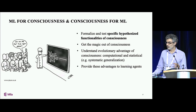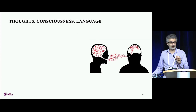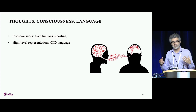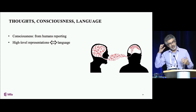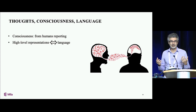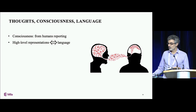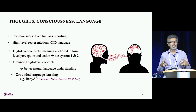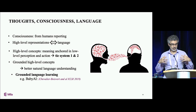Consciousness is closely related to language because the way that we know that somebody is conscious is by asking them to report what they're thinking about. There's a very strong link between your thoughts — things that you're conscious of — and language, and one can be translated to the other fairly easily, although there's a loss of information when you go from your thoughts to language. There's also a connection between system one and system two here, because those high-level concepts that we communicate with language are anchored in the system one intuitive system that connects your brain to the rest of the world through perception and action.